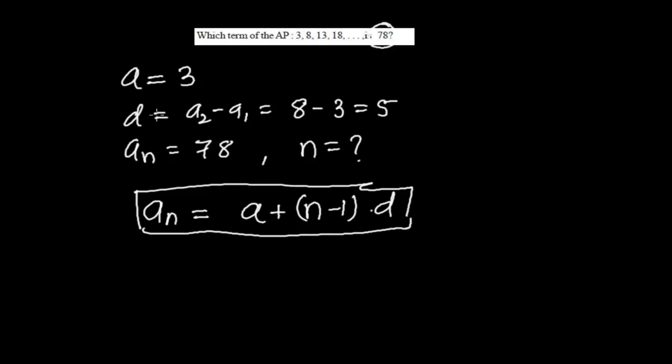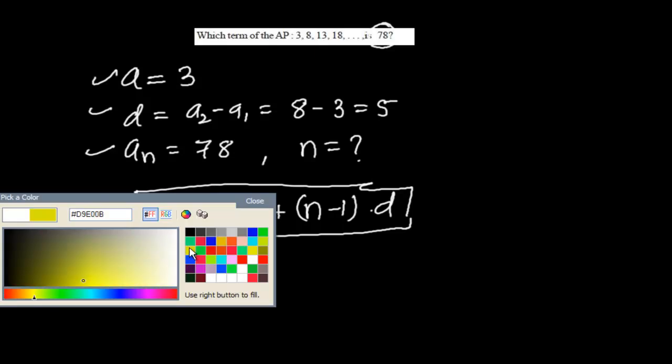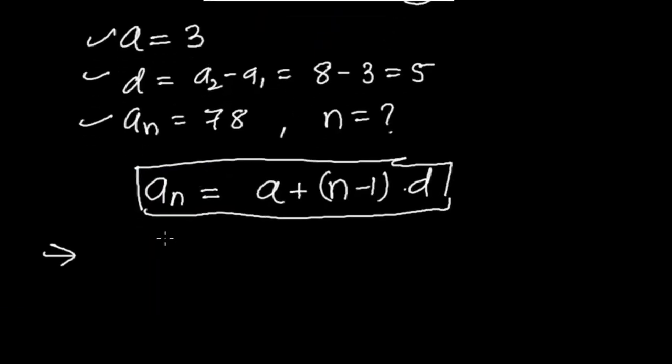In this nth term formula, put all the values whatever you know—automatically you will be getting n. I have already told you: in the nth formula there are four variables. If you know three variables, you can easily calculate the fourth one. So I'm just doing the same thing.